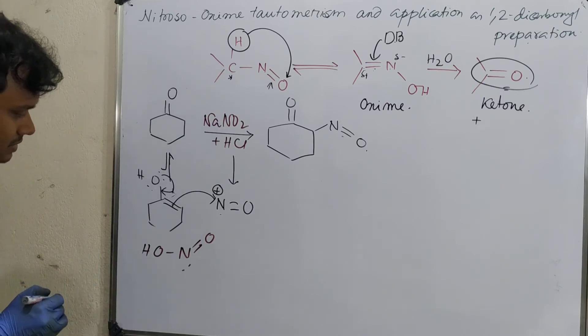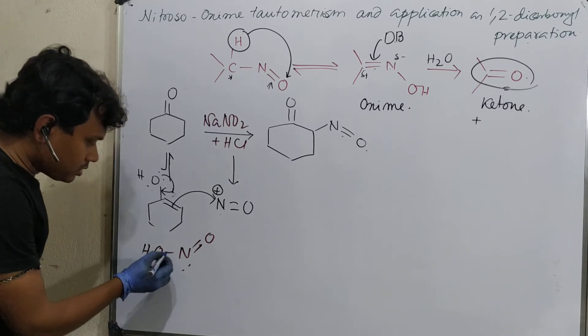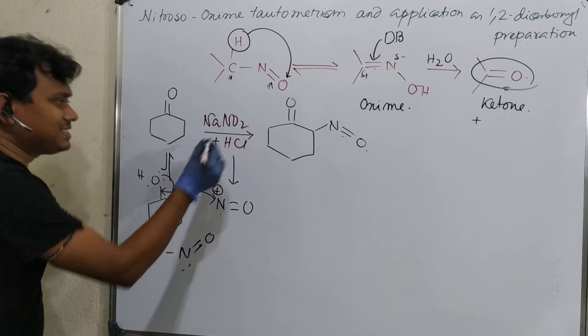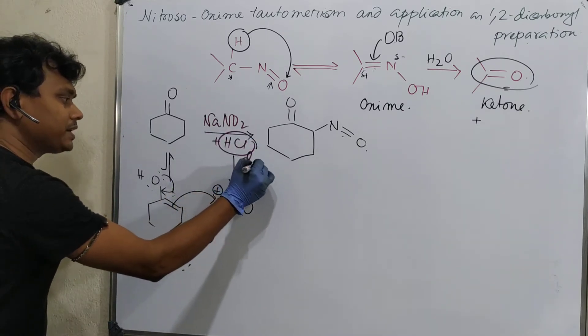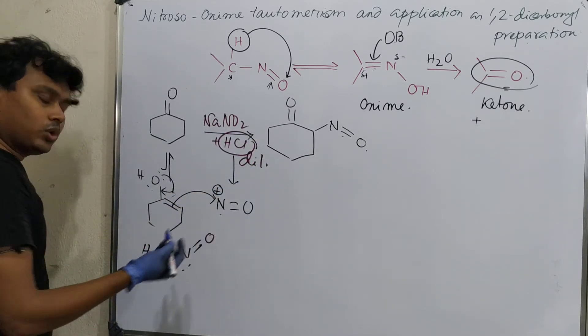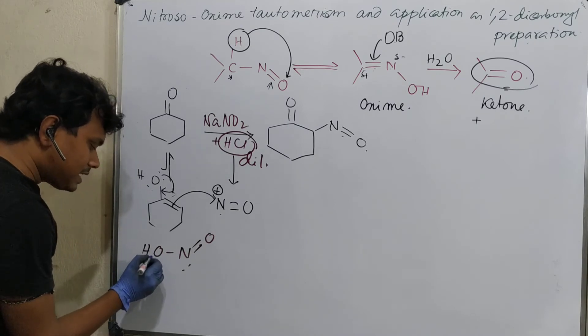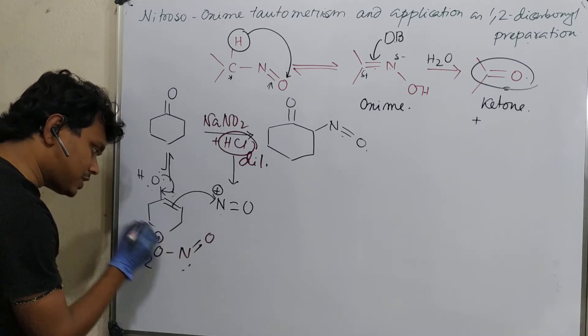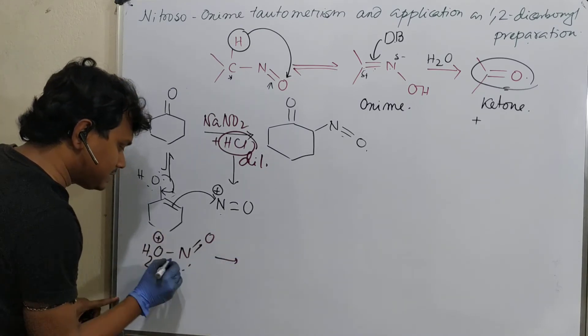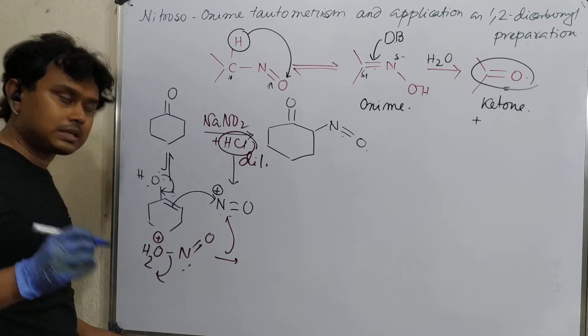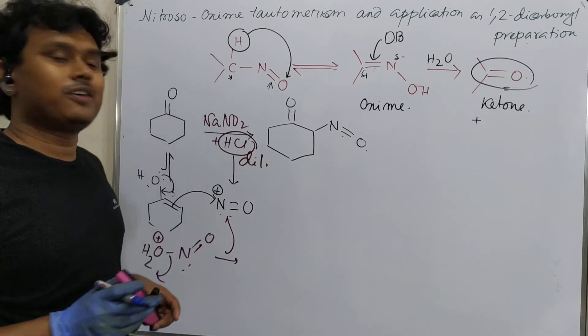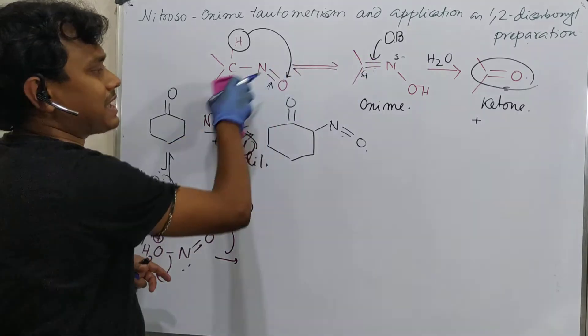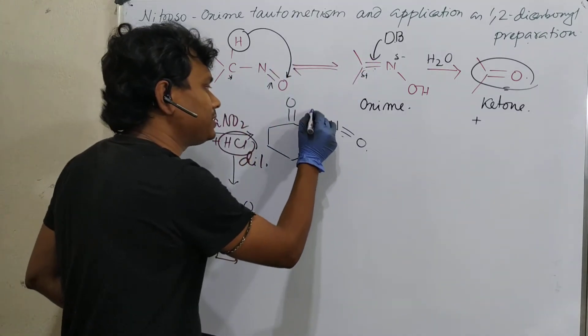So what does it do? In acidic medium, that is, in HCl, dilute HCl better to say, at low temperature. So what does it do? It resulted in OH2+ formation and after that, it leaves to generate this. This is the overall strategy. Now, fine, we have understood. And based on this acyl tautomerism, what can happen? This.